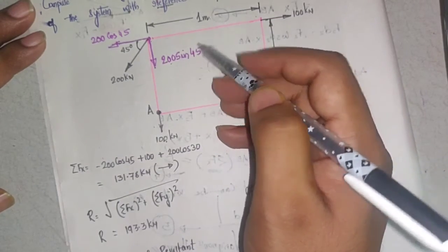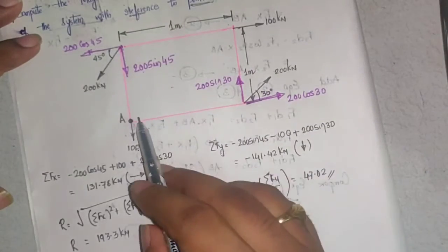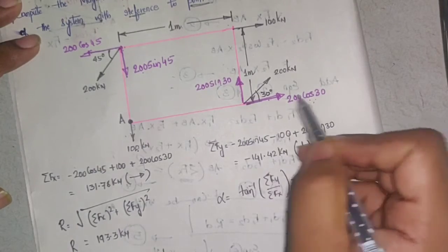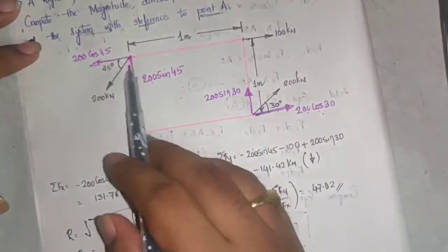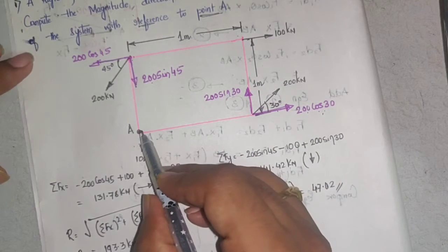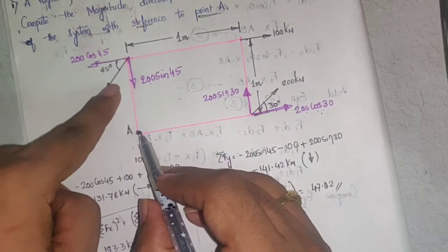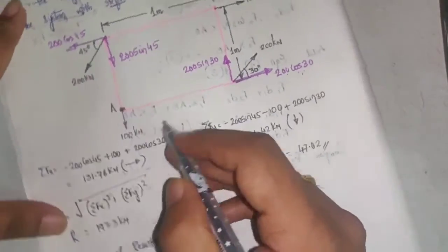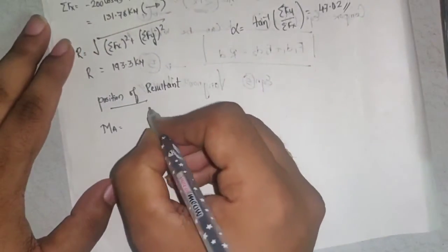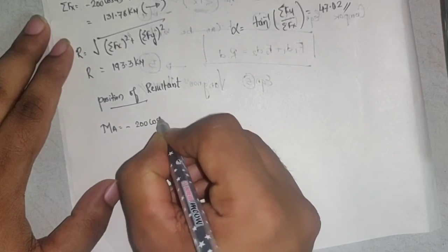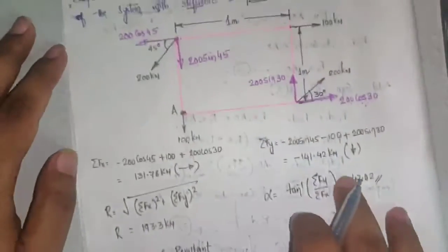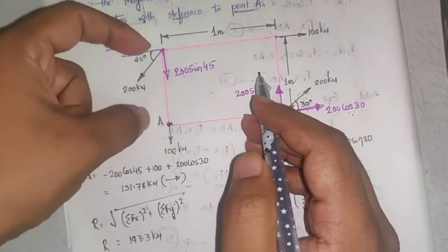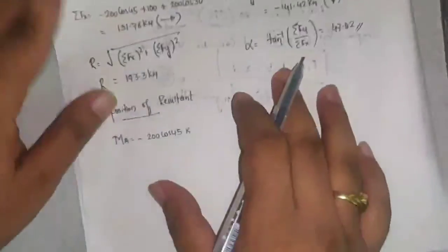So 100 is zero and 200 sin 45 is also zero. Checking the force 200 cos 30: this is also in line with A, so this force is also zero. Three forces give zero moment. Now for 200 cos 45 about point A: this force will rotate anti-clockwise, so it is minus 200 cos 45 into perpendicular distance of 1 meter.